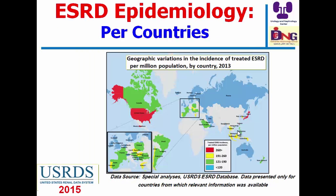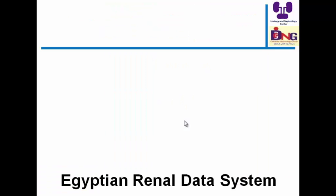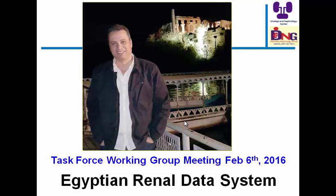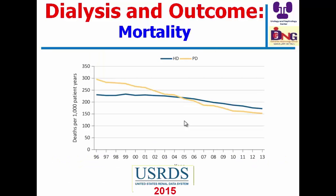Looking at this map, the white color is not good — it means there is no reliable data from these countries. We are in urgent need to have an Egyptian registry data system. The Egyptian Society of Nephrology is working hard to establish a new data system collecting data from dialysis centers and transplant centers all over Egypt, and we are involved as a task force group coordinating this activity.